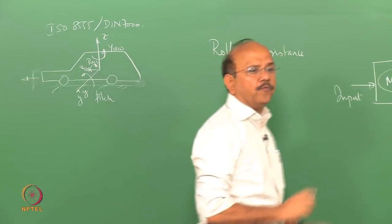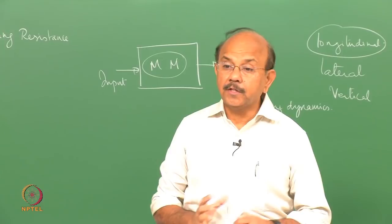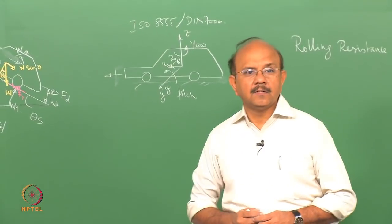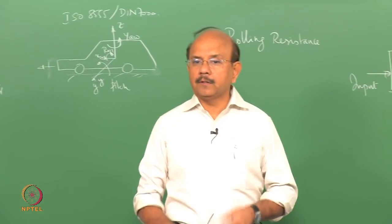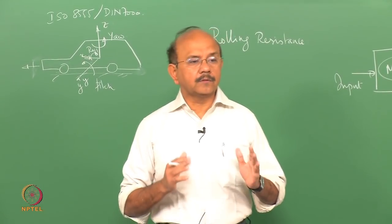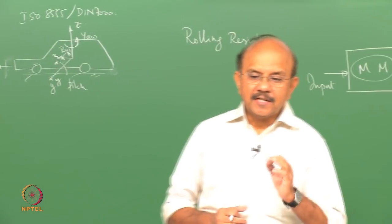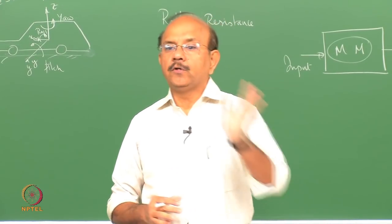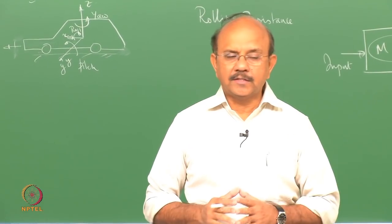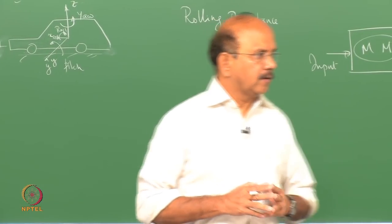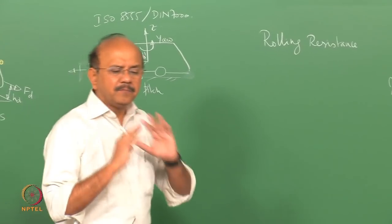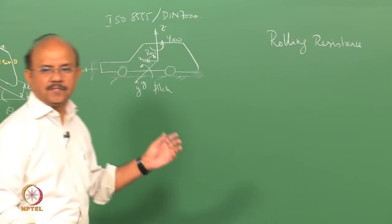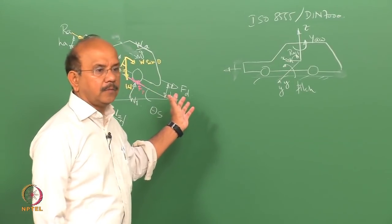Rolling resistance is today very, very important for fuel consumption. Especially in trucks, the rolling resistance — whose origin is the tyres — consumes nearly 30 percent of the fuel of the vehicle. We are going to do quite a bit of tyre dynamics in this course, but let us first understand what rolling resistance is and how we get it. Many students assume that rolling resistance is just the frictional resistance of the tyre — absolutely not. It is not frictional resistance.